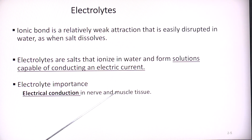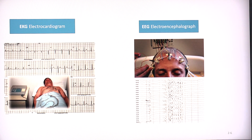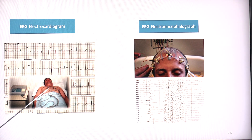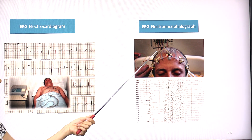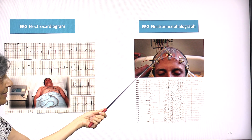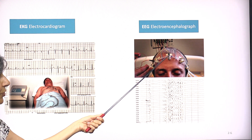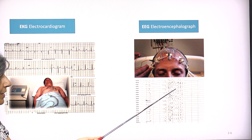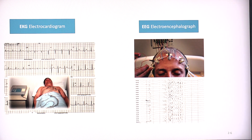Sodium, potassium, and similar electrolytes work in the body through electrical conduction that occurs in both the nerves and muscle tissue. This is something most of us are familiar with — an electrocardiogram records the heartbeat, and the waves show the movement of electrolytes in a certain sequence in the heart muscle. Similarly, an electroencephalograph shows waves representing nerve impulse conduction in the brain, also due to the movement of electrolytes like sodium in a certain sequence.